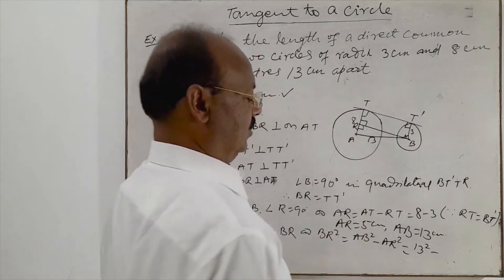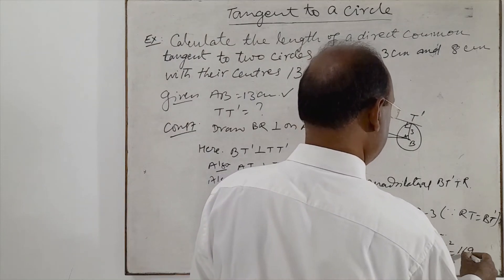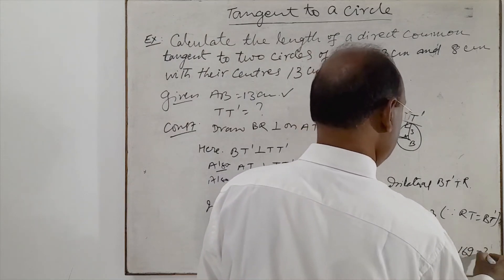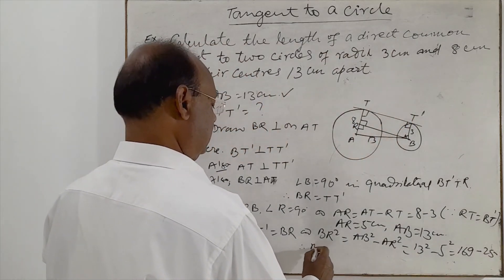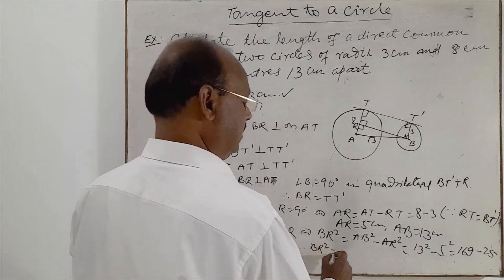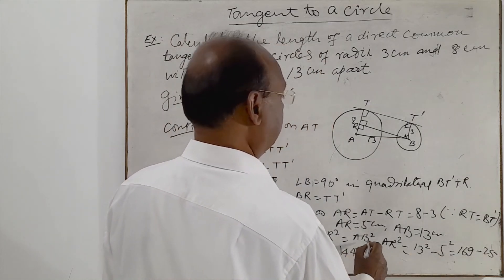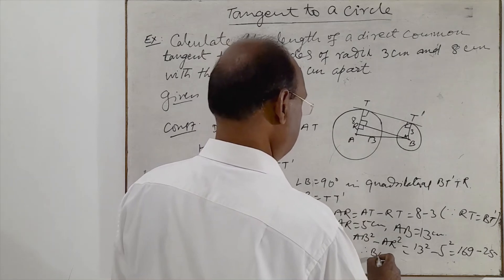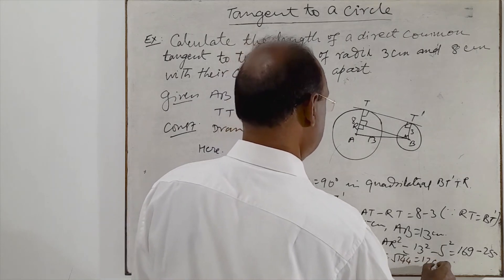AB squared means 13 squared. And AR squared is, AR is how much? 5. So minus 5 squared. 169 minus 25. Therefore, we are getting here BR squared is equal to 169 minus 25 is 144. And therefore, BR is equal to square root of 144.